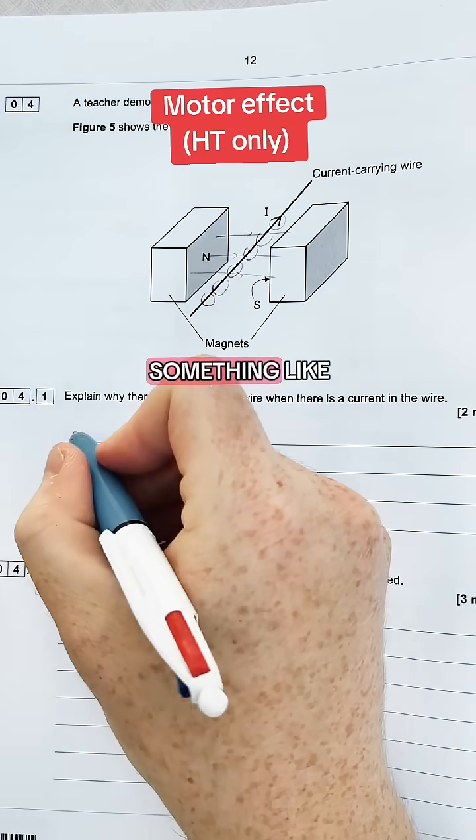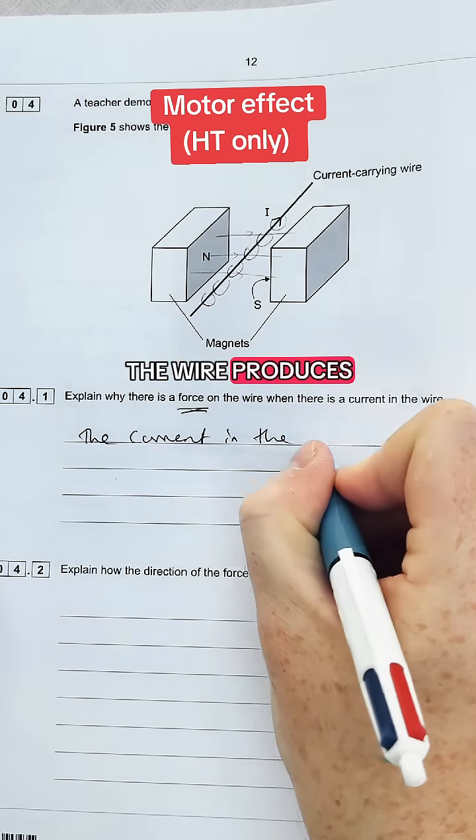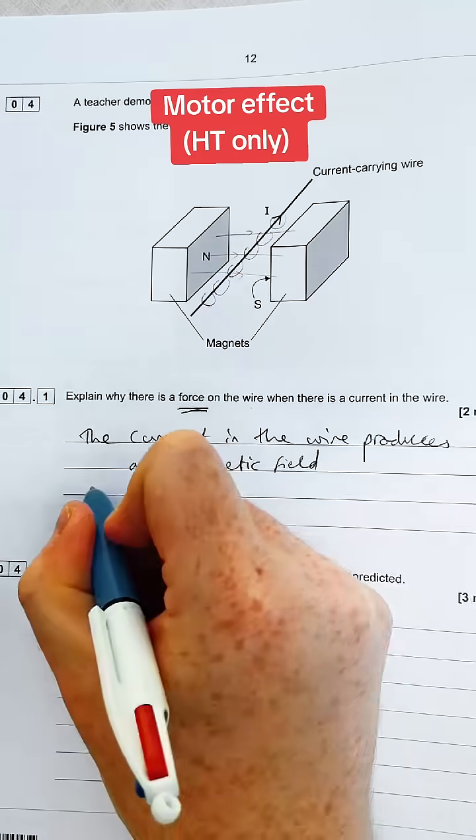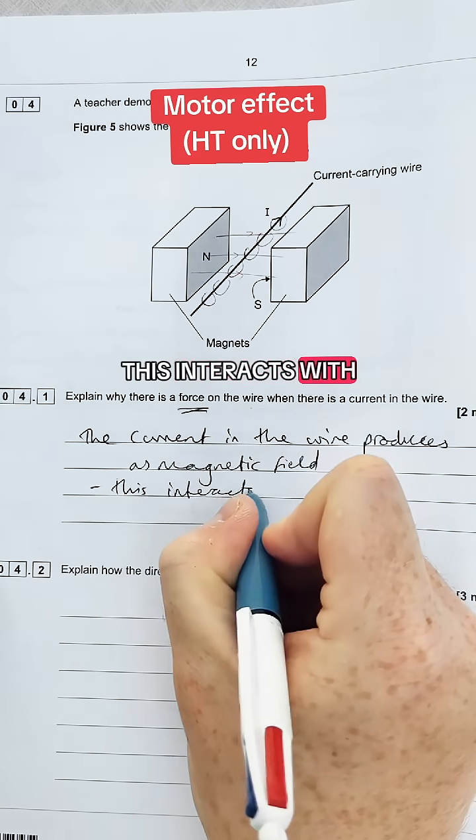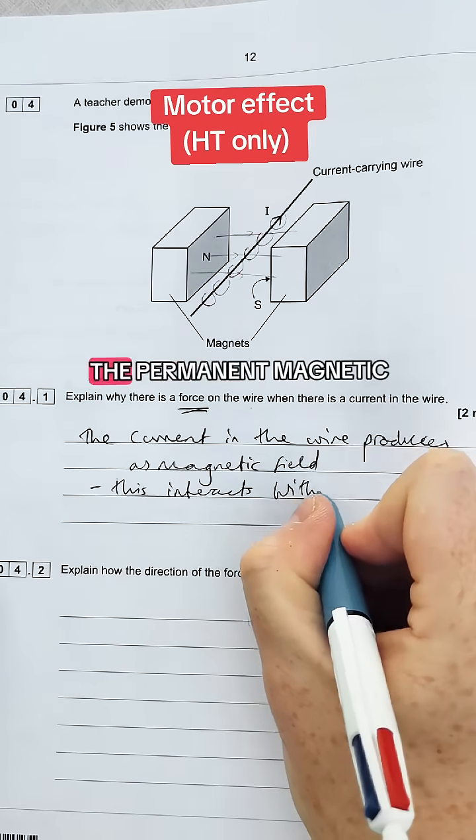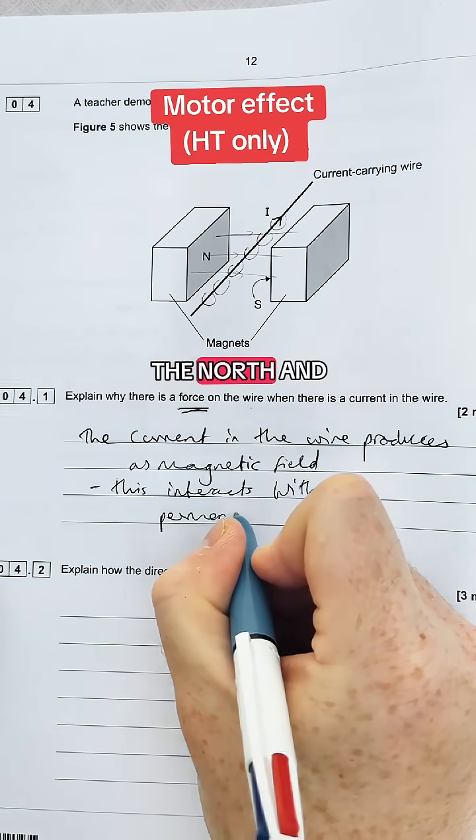So we'd say something like the current in the wire produces a magnetic field. Then we'd say this interacts with the permanent magnetic field. So that means the one between the north and the south pole.